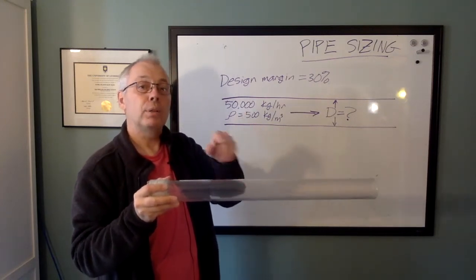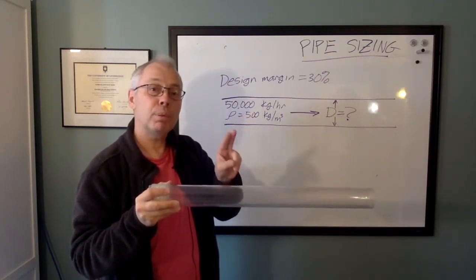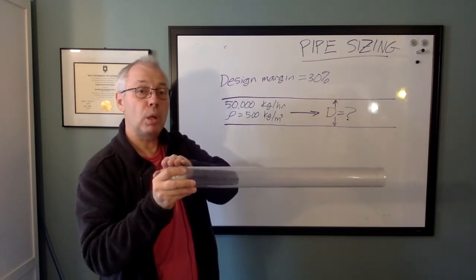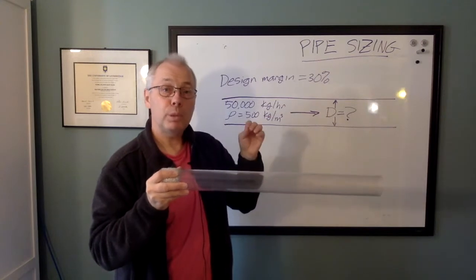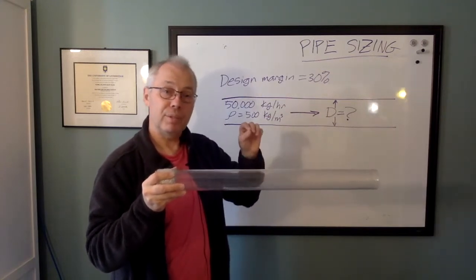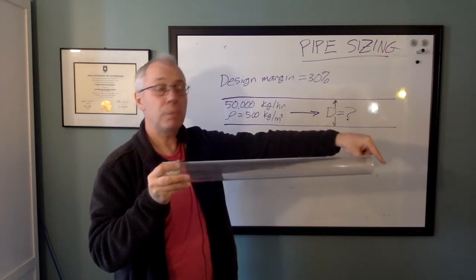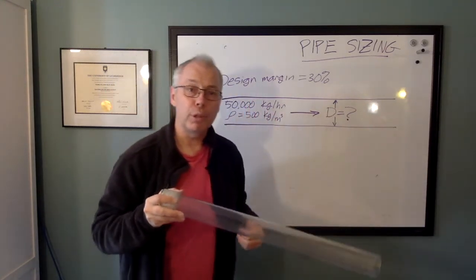That's criteria number one. That's a speed limit. Criteria number two is a little more interesting. And that is, if the pipe is too small, the pressure drop from the inlet to the outlet will be too high. And if it gets too high, whoever's on the outlet of this pipe will not be able to do their job. We'll look at criteria one first. Speed limit.